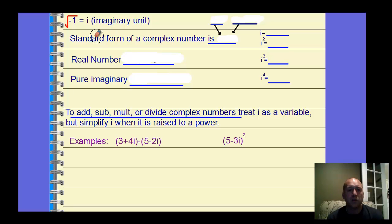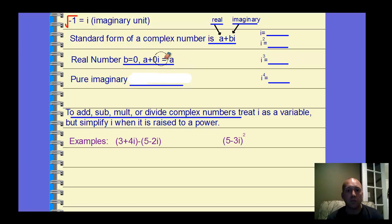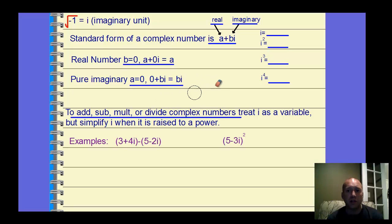These are called complex numbers when we start dealing with i. The standard form of a complex number is a plus bi, always written in this form. The a portion is called the real portion; the b is the imaginary portion. A real number can be written where b is 0 — the imaginary part is 0, leaving just the a value. A pure imaginary number is just the bi part, where the a value is 0.